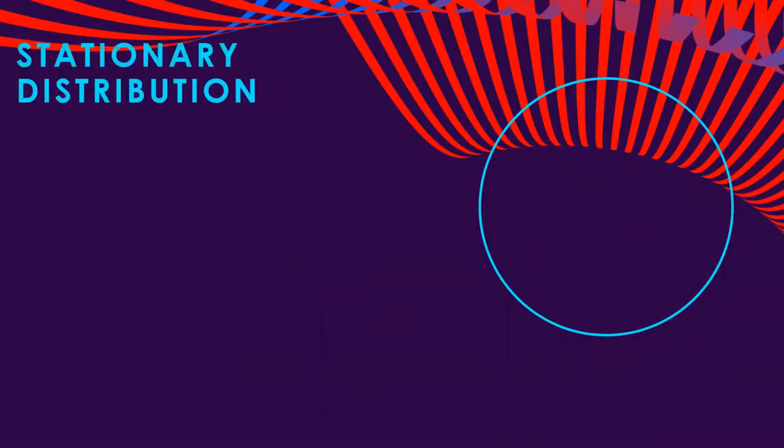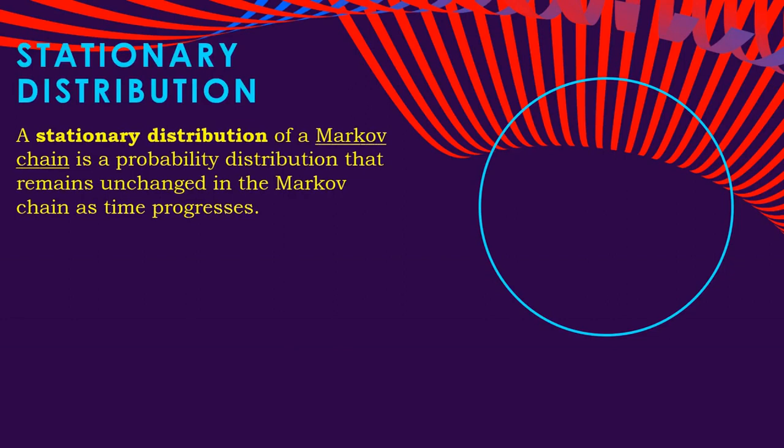Before that let us know what is a stationary distribution. A stationary distribution of a Markov chain is a probability distribution that remains unchanged in the Markov chain as time progresses.